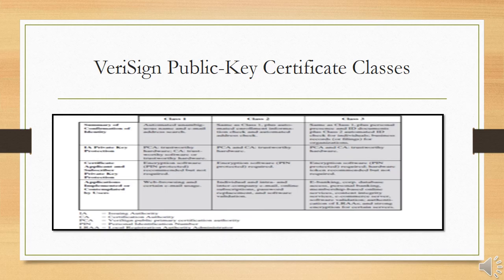For class 2, confirmation is sent to the specified postal address alerting the user that a digital ID has been issued in their name. For class 3 digital IDs, VeriSign requires a higher level of identity assurance. An individual must prove their identity by providing notarized credentials or applying in person.